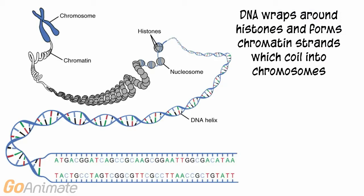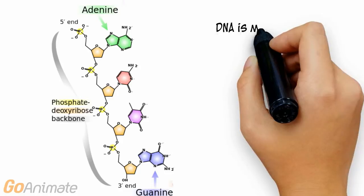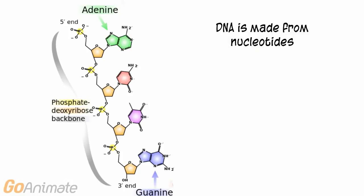DNA wraps around proteins called histones and forms chromatin strands that coil up to form chromosomes. The human has 46 chromosomes. DNA is made from smaller units called nucleotides.